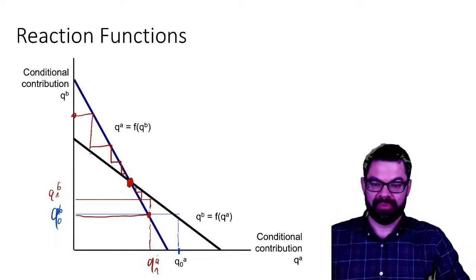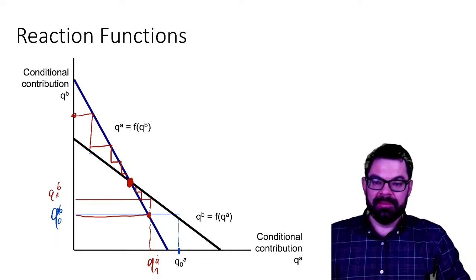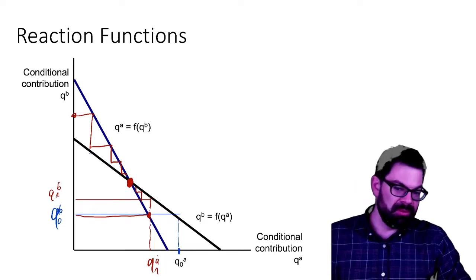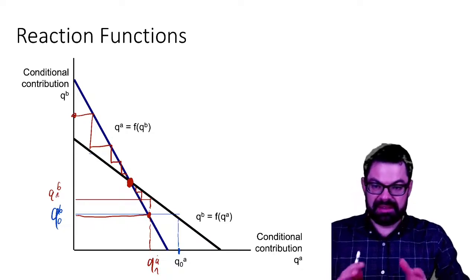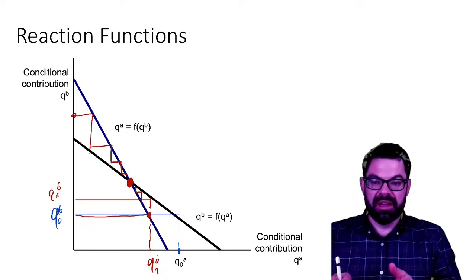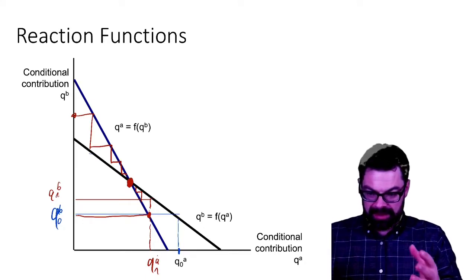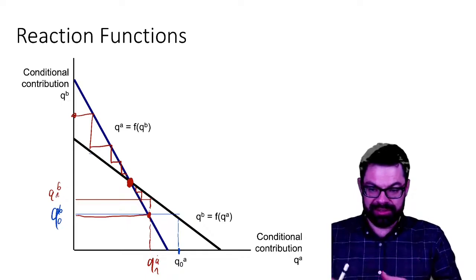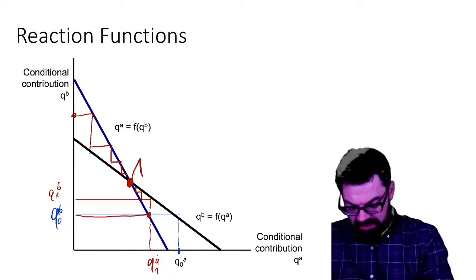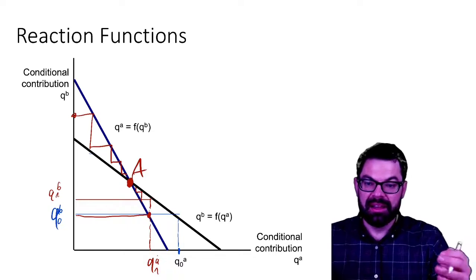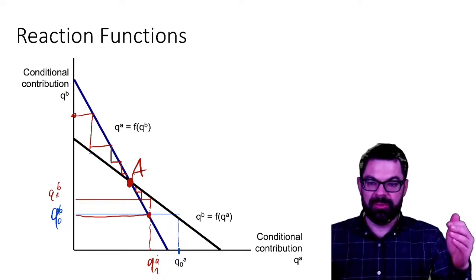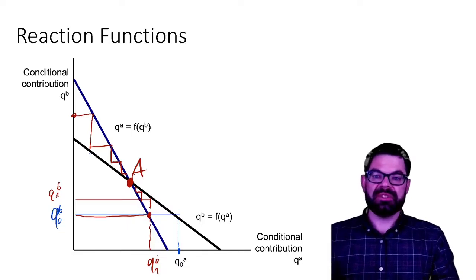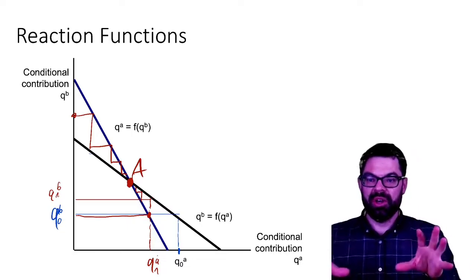What we will look at in the next video is: to what extent is the contribution to the public good at the Nash equilibrium — let's call it point A, the red dot — actually socially optimal?